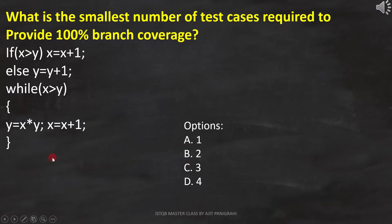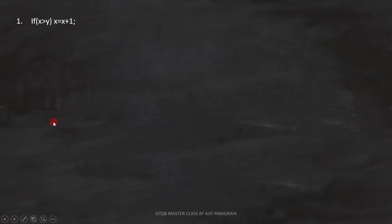To do that, let's first analyze the code and draw the flowchart. First line is, if x is greater than y, then x equals x plus 1. Here we have condition and statement together. If x is greater than y is the condition, and x equals x plus 1 is a statement. And this statement will execute when condition becomes true. This is how we have to represent line number 1 in flowchart.